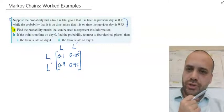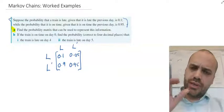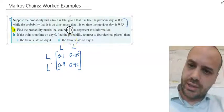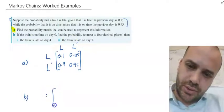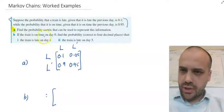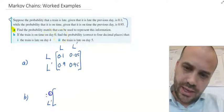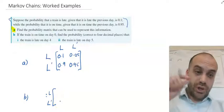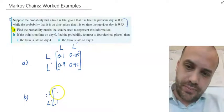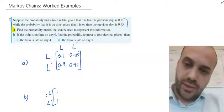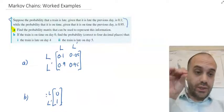Part B. If the train is on time on day 0, so what we've got is a state matrix here. Let's just call that part A. Part B. Now, state matrix is going to be equal to if the train is on time on day 0. So that's not late. Not late is down there and late is up here. The probability, we're told that it was not late. So the probability that it was not late on that day is 1. And the probability that it was late on that day was 0. So that is our initial state matrix.